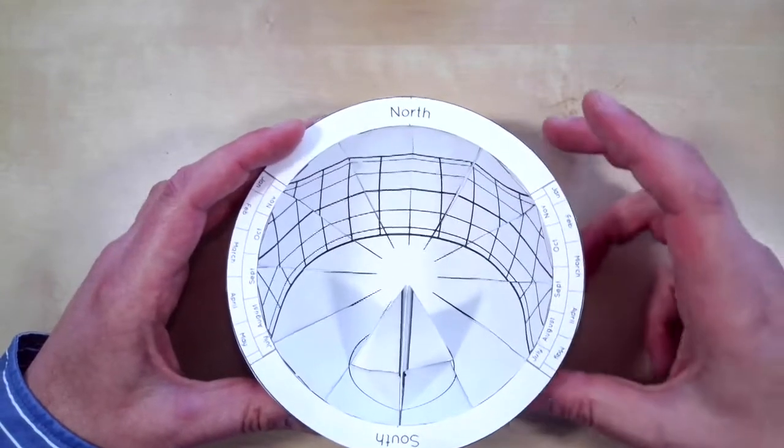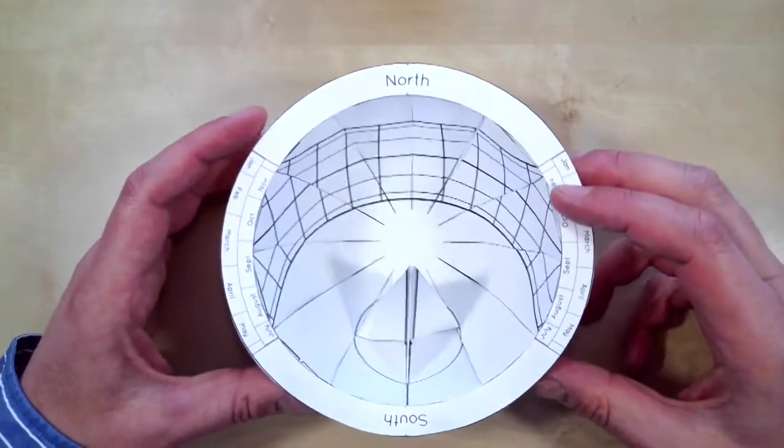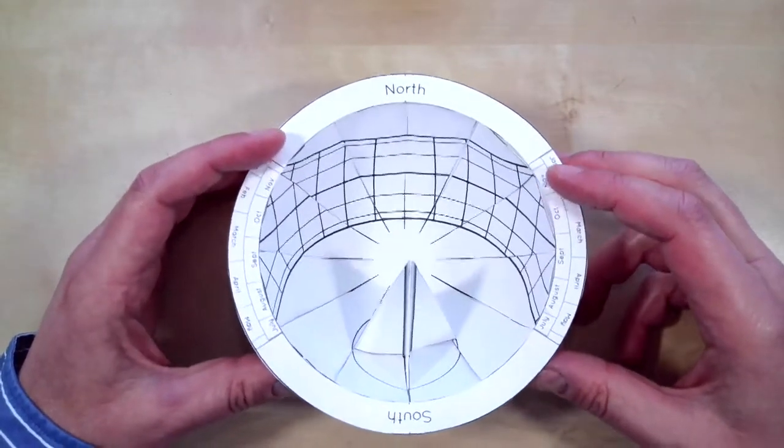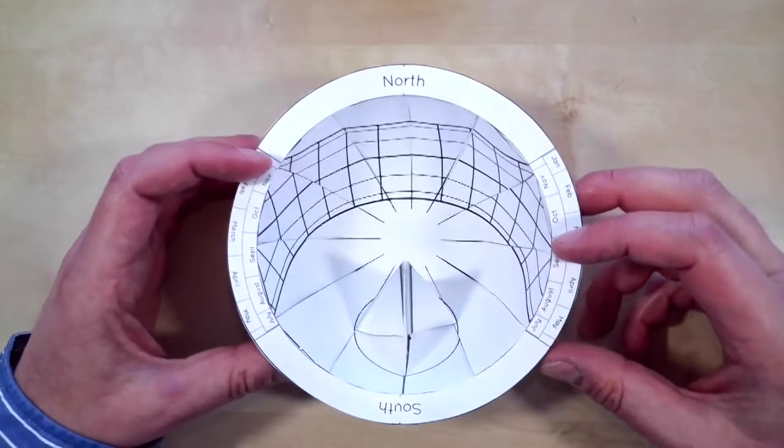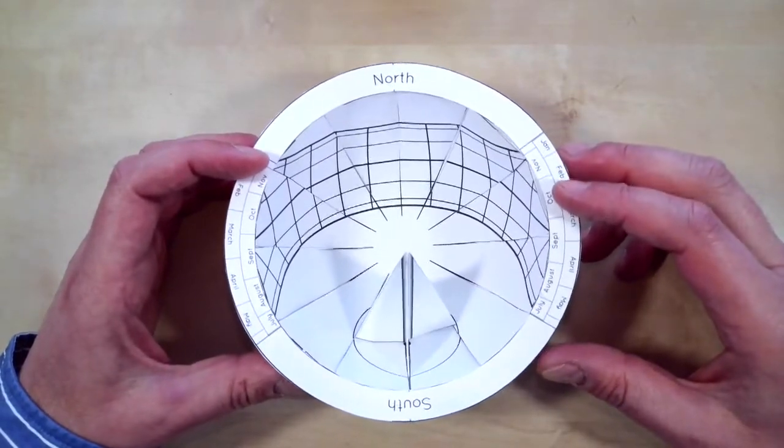So this is what's known as a hemispherical sundial, and the ancient Greeks made sundials like this two and a half millennia ago. They had their own working models of the sky two and a half millennia ago.